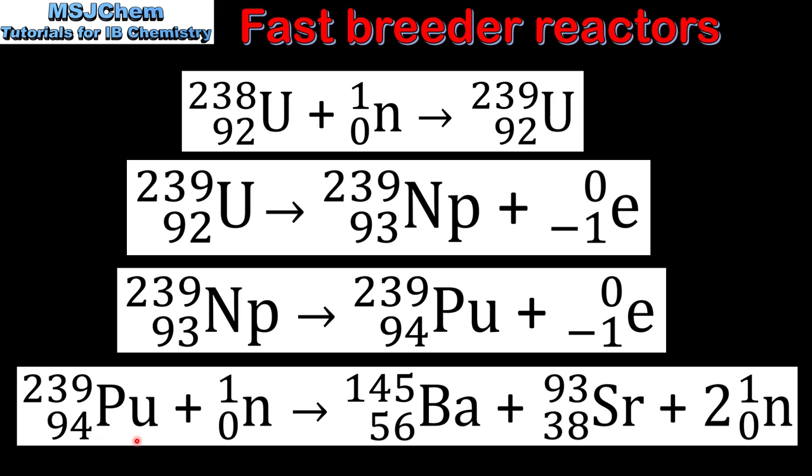The products are barium-145, strontium-93, and two neutrons. So in this series of steps, non-fissionable uranium-238 is transformed into fissionable plutonium-239, which then undergoes nuclear fission.